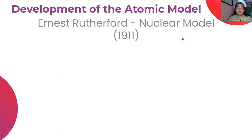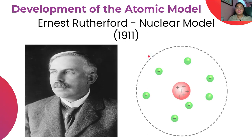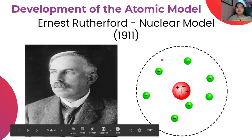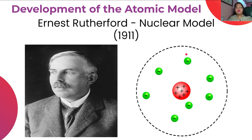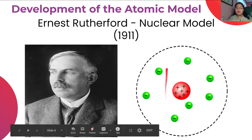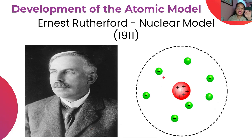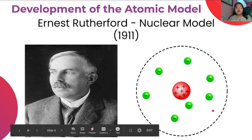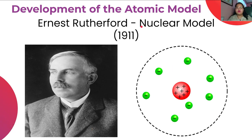The next model is the nuclear model in 1911 by Ernest Rutherford. Rutherford developed this nuclear model through his gold foil experiment. From that experiment, he discovered that the center of the atom has a positively charged particle, and the rest of the atom is empty space where the electrons are found.